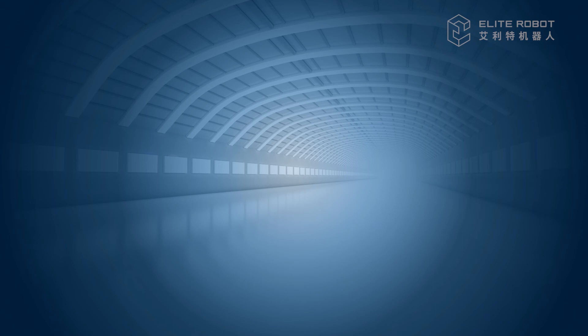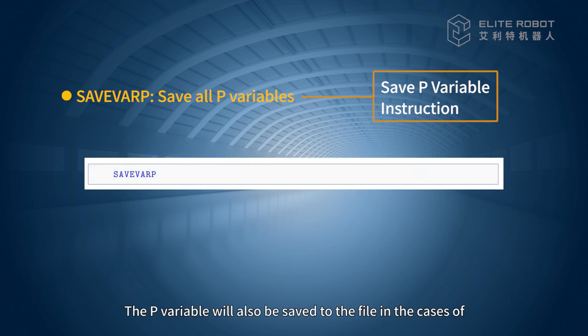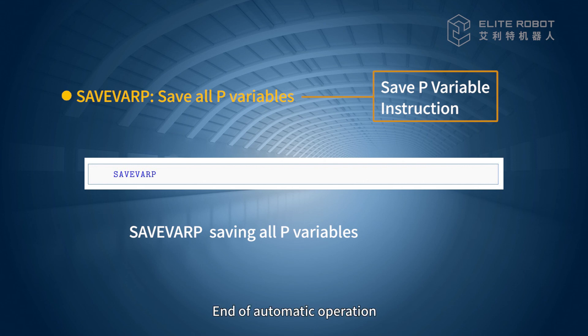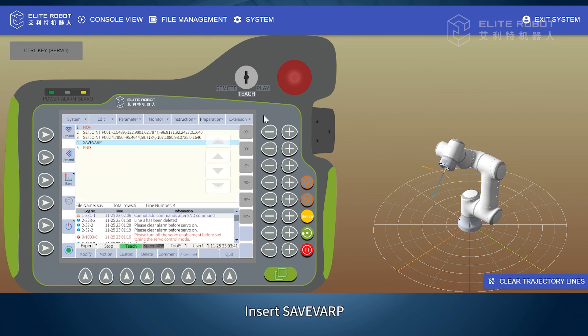Save Var P. This function saves all P variables. Note: the P variable will also be saved to file in the cases of switching from automatic mode to other modes, emergency stopping, end of automatic operation, or modifying the value of a P variable on the monitoring interface. Example: Insert Set Joint P001, Set Joint P002, then Insert Save Var P — the program will save variables P001 and P002 at end of automatic operation.